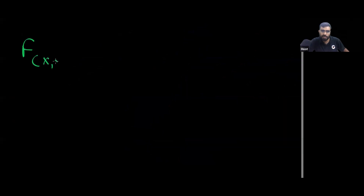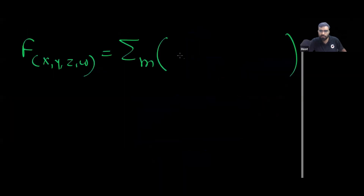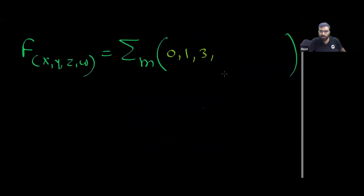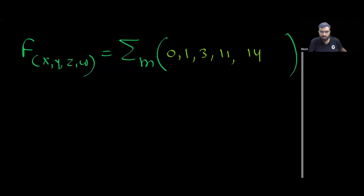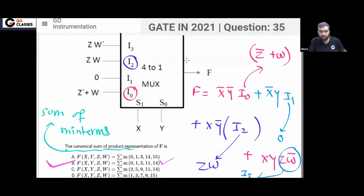So for the function f with variable order X, Y, Z, W, the complete set of minterms is: Σm(0, 1, 3, 11, 14). This is the canonical sum of products. The answer is option B.